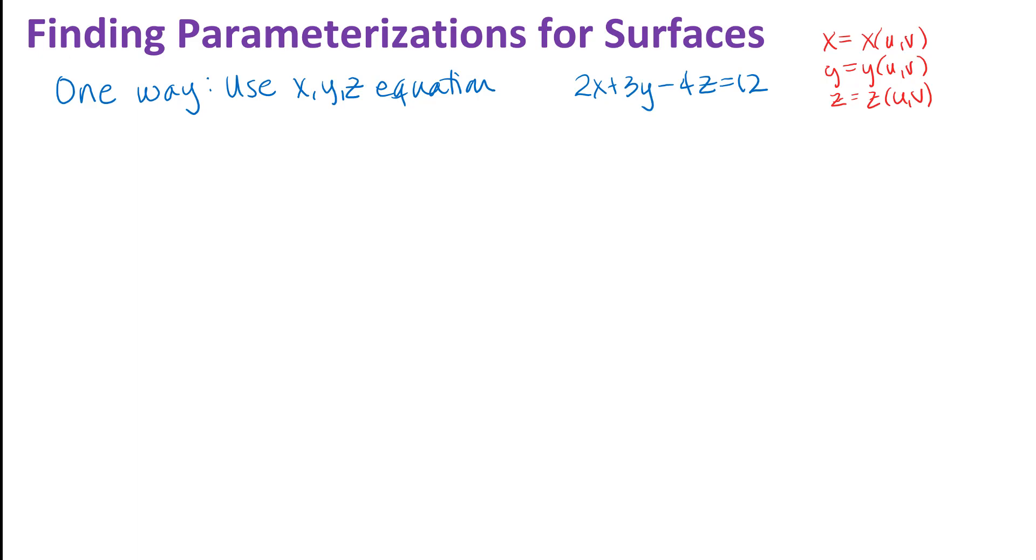For example, I have an equation of a plane written down here, 2x plus 3y minus 4z equals 12. And one way to get a parameterization for that would be to just let x be u and y be v and then solve for z in my equation of my plane with u in place of x and v in place of y. You can see over here I did some scratch work where I put in u in place of x and v in place of y and then solve for z. And so what I have over here is a nice parameterization for that plane.